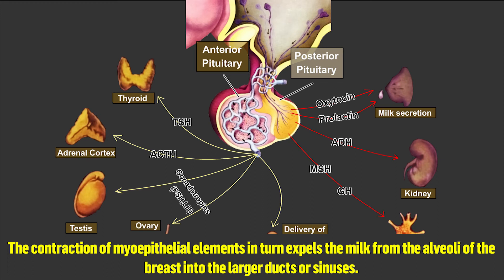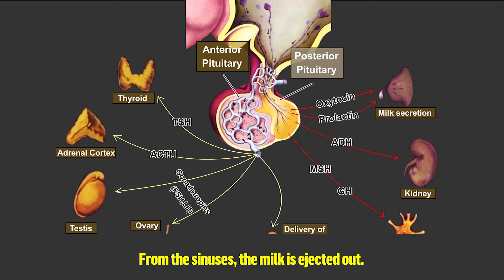The contraction of myoepithelial elements in turn expels the milk from the alveoli of the breast into the larger ducts or sinuses. From the sinuses, the milk is ejected out.